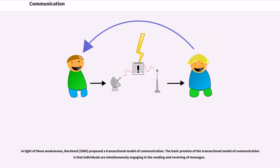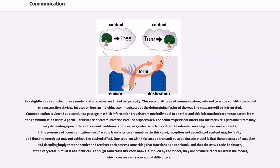In a slightly more complex form, a sender and a receiver are linked reciprocally. This second attitude of communication, referred to as the constitutive model or constructionist view, focuses on how an individual communicates as the determining factor of the way the message will be interpreted. Communication is viewed as a conduit, a passage in which information travels from one individual to another, and in this information becomes separate from communication itself. A particular instance of communication is called a speech act. The sender's personal filters and the receiver's personal filters may vary depending upon different regional traditions, cultures, or gender, which may alter the intended meaning of message contents. In the presence of communication noise on the transmission channel (air in this case), reception and decoding of content may be faulty, and thus the speech act may not achieve the desired effect.